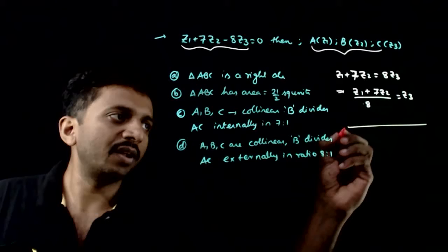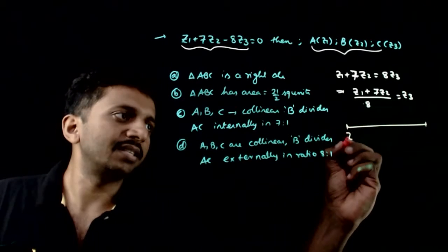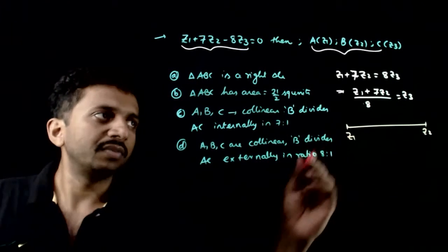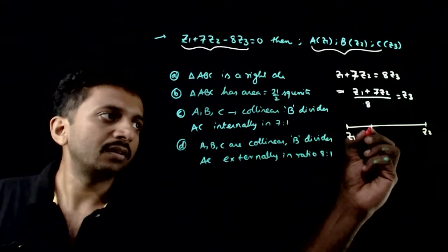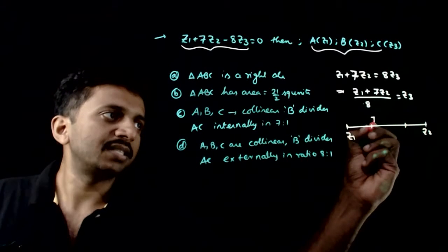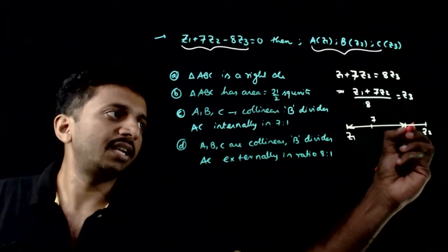So how does this formula work? Manually, if Z1 is here and Z2 is here, this is 7 and this is 1, a 7 to 1 ratio.